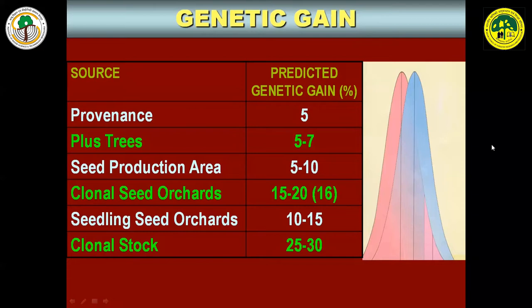There are certain terms that matter a lot. Provenance gives a genetic gain of about 5%. Plus trees give a gain of 5–7%. Seed production areas — considered the minimum unit of tree improvement — give a gain of 5–10%. Clonal seed orchards give 5–20%, with 16% having been realized in many crops in India. Seedling seed orchards give 10–15%. Clonal stock gives as high as 25–30%. However, clonal stock gain is a one-time intermittent gain of a long-term breeding program, not a continuous cumulative improvement.